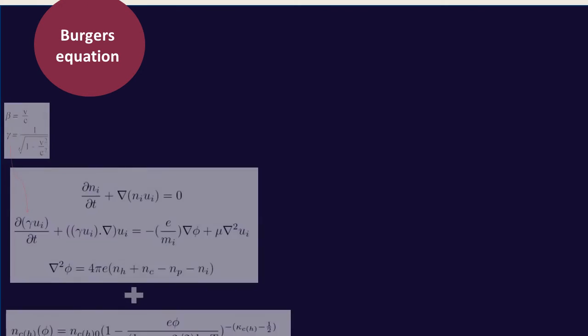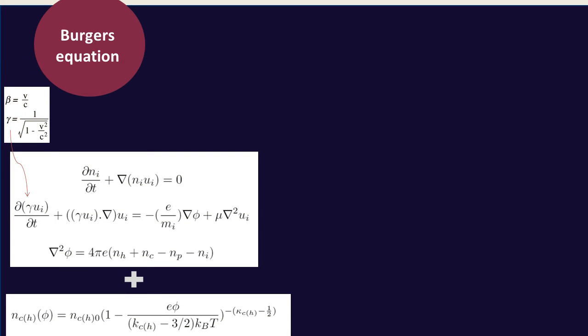This is the plasma model that we chose to work with. It is described by the three equations of continuity, momentum conservation and Poisson's equation. We considered a four component plasma composed of hot and cold superthermal electrons, ions and positrons.